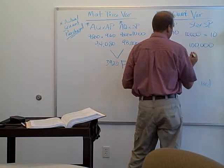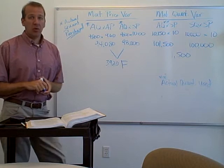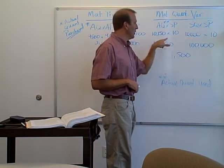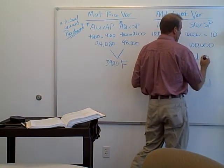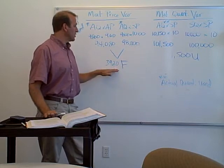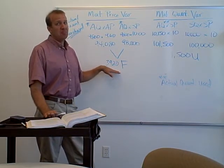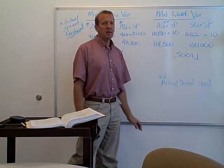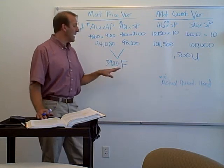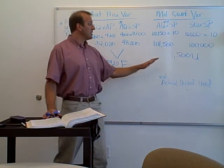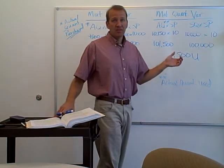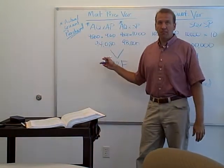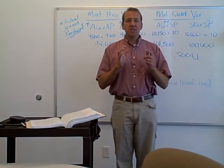So we've got a $1,500 variance. Is that favorable or unfavorable? We used $101,500 worth of material but should have used $100,000 — we used too much, so that is an unfavorable variance. This might connect back to the price variance: did we purchase lower-quality materials, and is that what caused this unfavorable quantity variance? The manager building the boats might not be happy with the purchasing manager, because maybe the materials weren't as good. That would be the first place to look and say, don't blame me for this unfavorable variance — maybe the materials weren't as good. That covers the materials price and materials quantity variances.